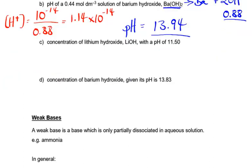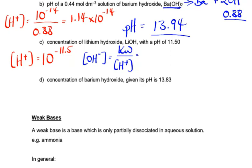For the final two examples, we go the other way — given the pH, we work out the concentration of the alkali. Given the pH, we first get the hydrogen ion concentration: 10 to the minus pH, so 10⁻¹¹·⁵. Then the hydroxide ion concentration is 10⁻¹⁴ divided by 10⁻¹¹·⁵, which gives 3.16×10⁻³ mol dm⁻³. Since lithium hydroxide is in a 1:1 ratio, that's also the concentration of the lithium hydroxide.